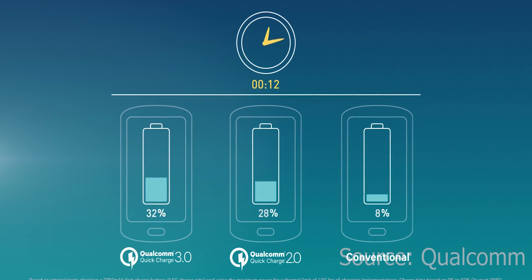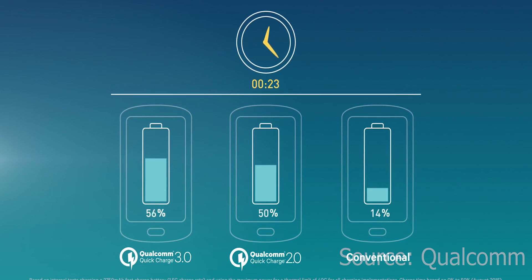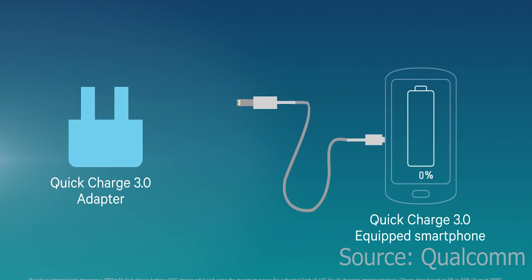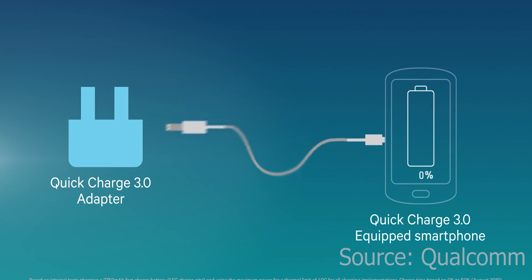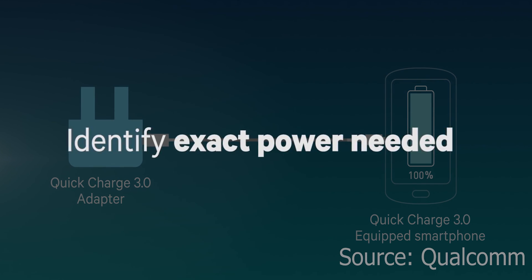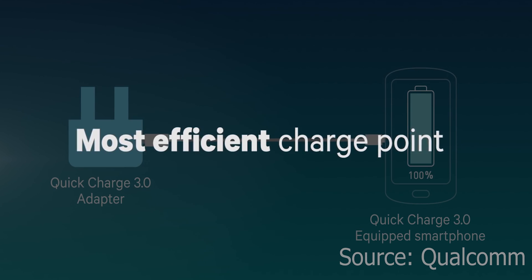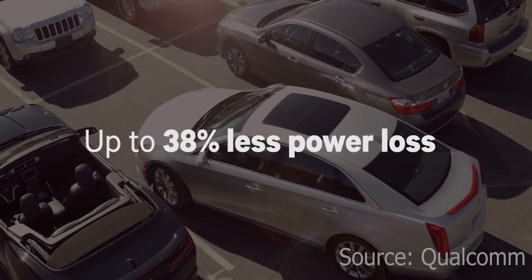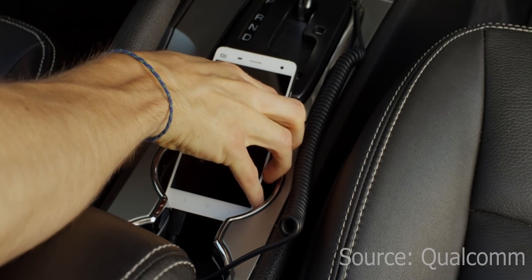In Qualcomm's Quick Charge 3, the voltage increases while the amperage is reduced to around 1.5 amps. So the total output is 18 watts. That's why the charging speed increases. A standard charger is 10 watts; Quick Charge 3 is 18 watts. In Qualcomm's approach, voltage increases but current is a little less.